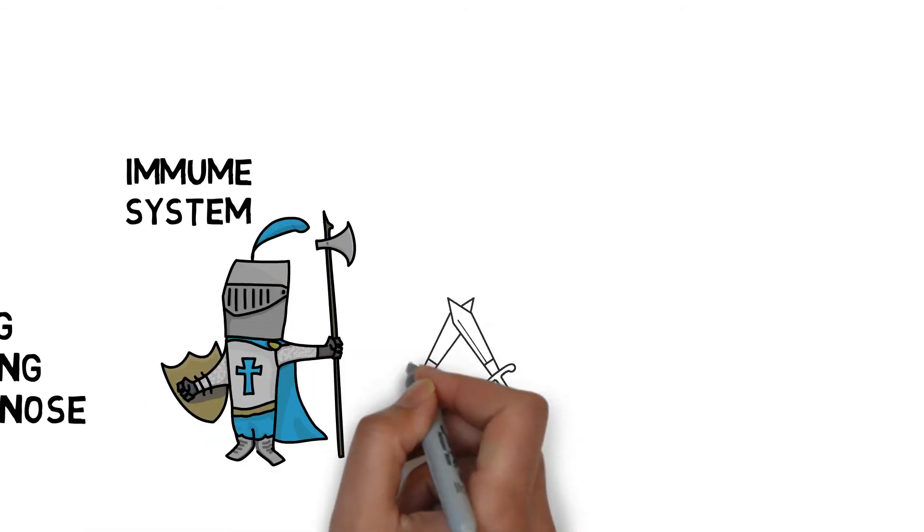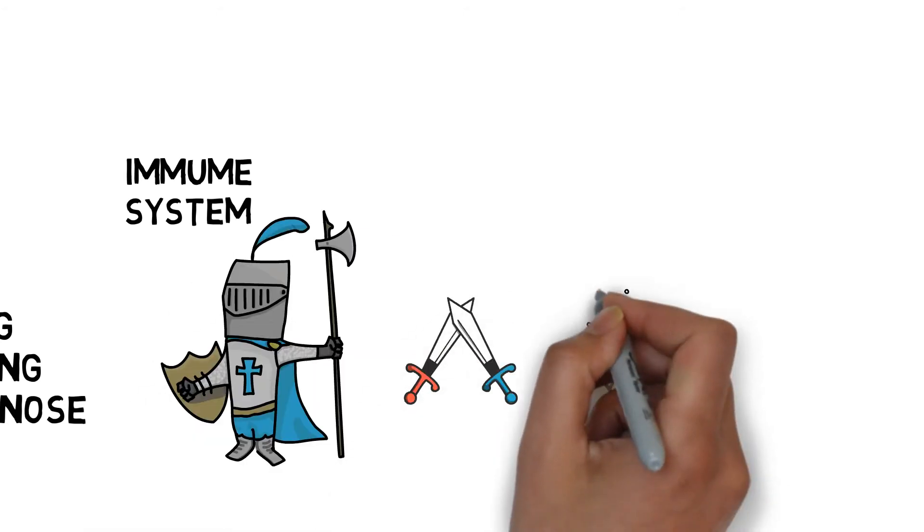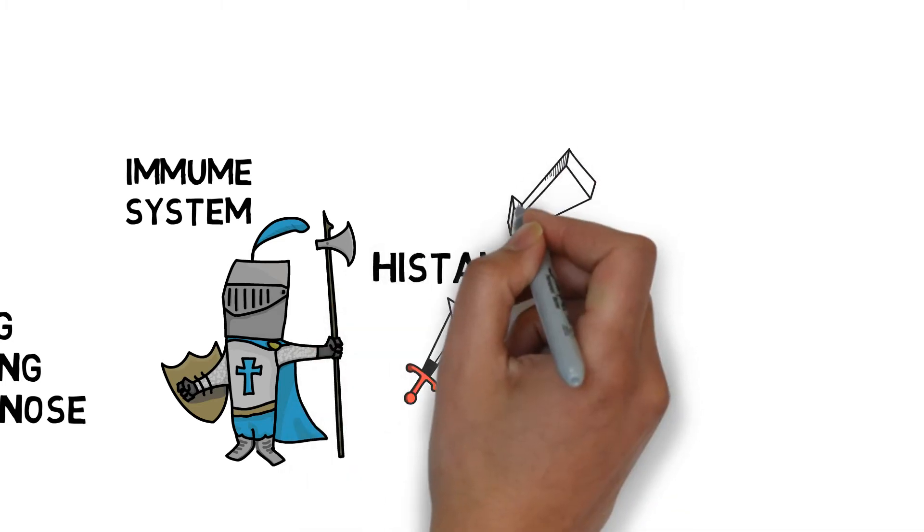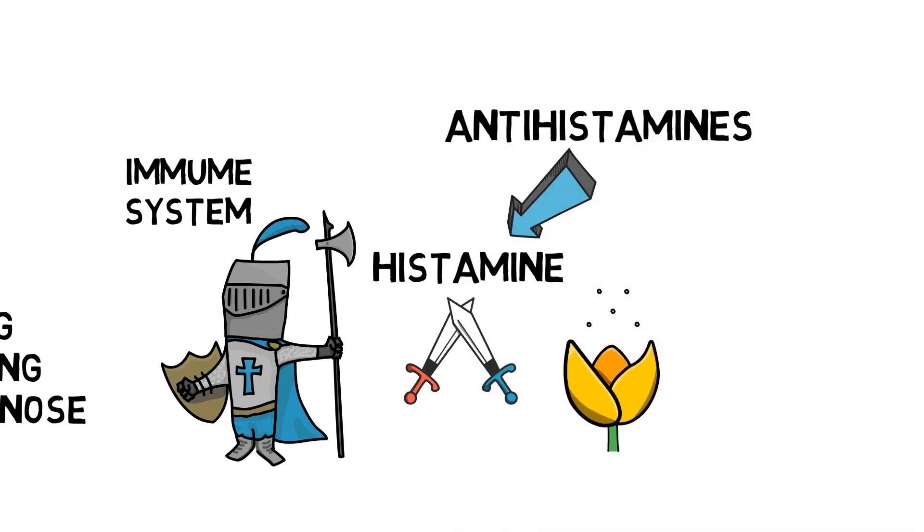Antihistamines can effectively block the action of histamine, a chemical released by the immune system when it wrongly fights with airborne allergens and makes the nose feel uncomfortable. Since it has very little help to relieve nasal congestion, sometimes people will use it with other medications together to get a better result.